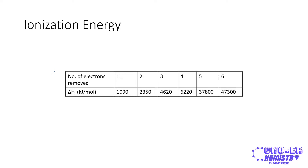Over here we can see a table with six ionization energy values for the element carbon, which has a proton number of six, so it has six electrons and therefore six ionization energy values. We know that the simple electronic configuration of carbon is 2,4 — two electrons in the first and four in the second principal quantum shell.